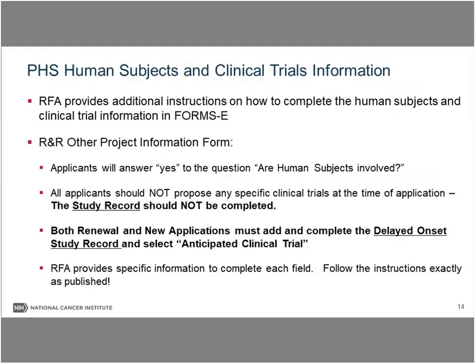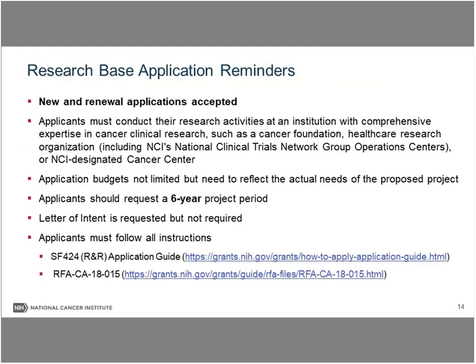For those of you who applied previously, there have been some changes in how human subjects and clinical trials information is handled. The RFA provides specific instructions that you can use to provide this information in what is called Forms E. In the other project information form, you will answer yes to the question, are human subjects involved? However, you should not propose any specific clinical trials at the time of application, which means you will not complete a study record. Both renewal and new applications must add and complete the delayed onset study record and select anticipated clinical trial. Follow the instructions exactly as shown in the RFA.